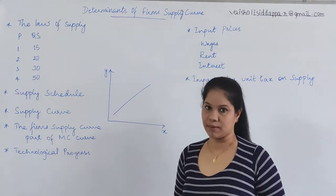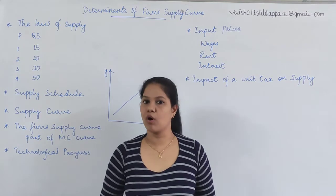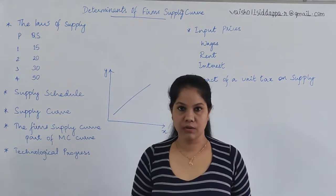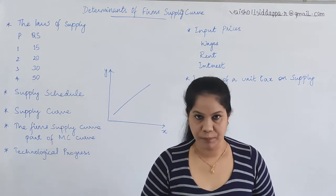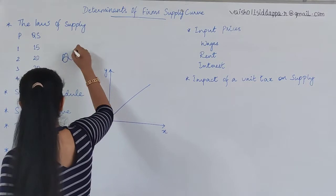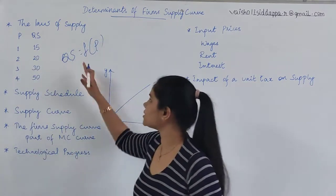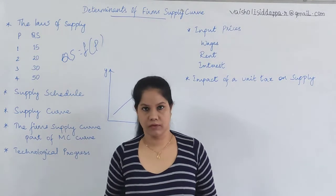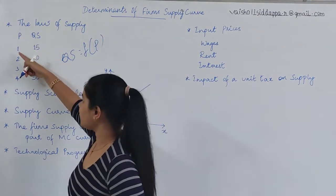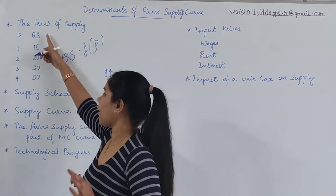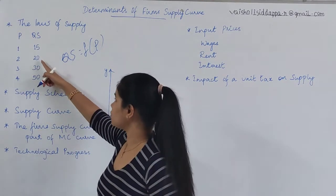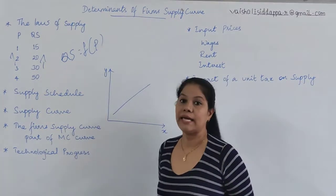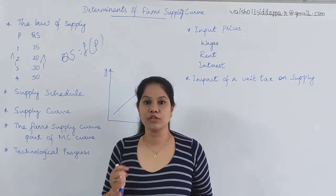What are the determinants we have in the supply curve? Before talking about the firm's supply curve, let me talk about the individual law of supply and how it works. The law of supply states a positive relationship: quantity supplied is a function of price. When price increases, quantity supplied also increases. If price is decreasing, quantity supplied is also going to decrease.